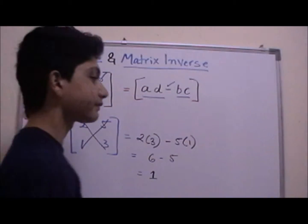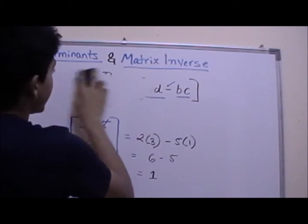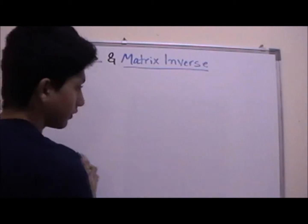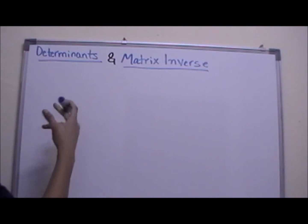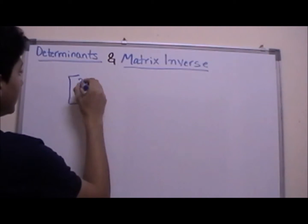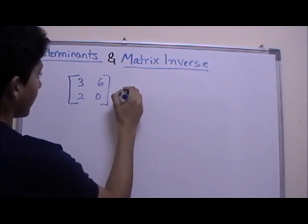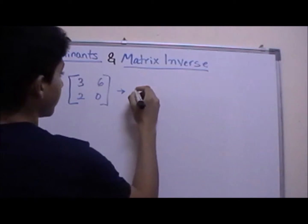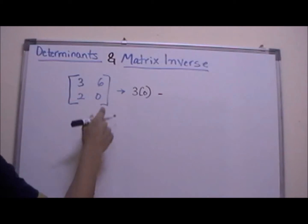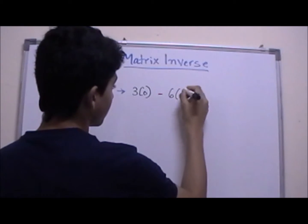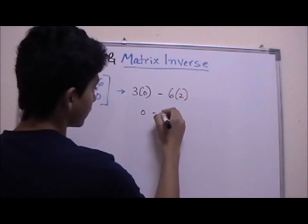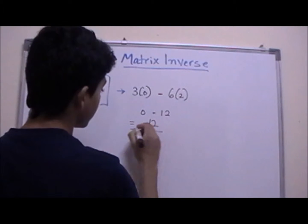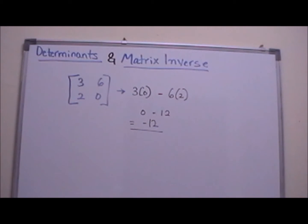Let's solve one more example. We have the matrix with entries three, six, two, zero. Using the X method: three times zero comes first, minus sign in the middle, then six times two. Three times zero is zero, zero minus twelve equals negative twelve. So negative twelve is the determinant of this matrix.